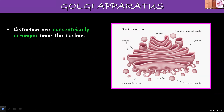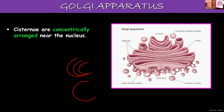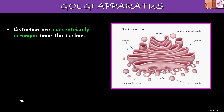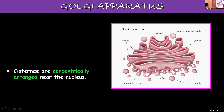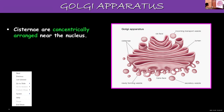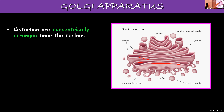The cisternae are concentrically arranged near the nucleus. Concentric arrangement means they are arranged in a pattern like concentric circles. These cisternae are stacked one above the other parallelly, and they are concentrically arranged near the nucleus.